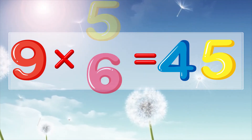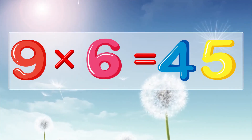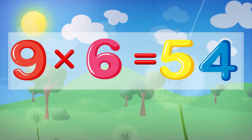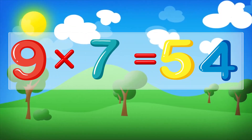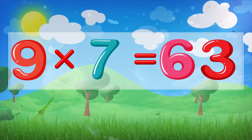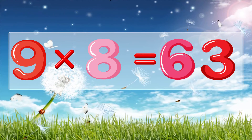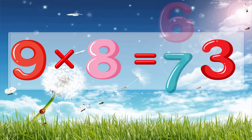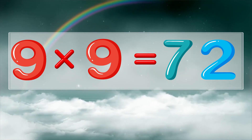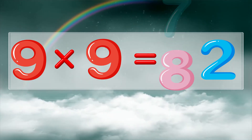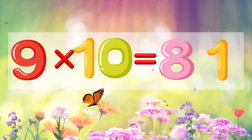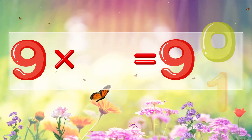Nine times six is fifty-four. Nine times seven is sixty-three. Nine times eight is seventy-two. Nine times nine is eighty-one. Nine times ten is ninety.